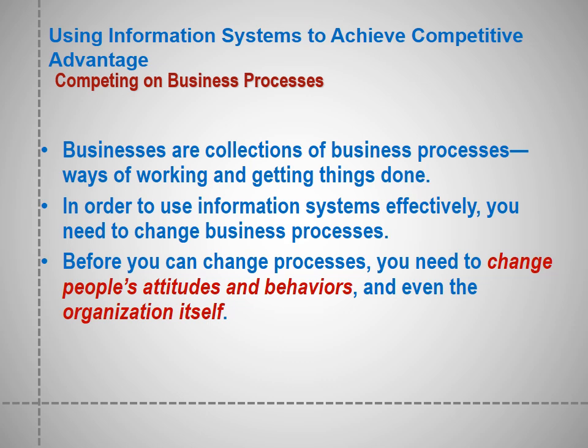Now we go to competing on business processes. Businesses are collections of business processes — ways of working and getting things done. Sometimes they are written in manuals, but in many cases they are informal. To use information systems effectively, you need to change business processes, and one way to do it is to change people's attitudes and behaviors. Traditional organizations are often resistant to change, and that's the problem. In order to improve business processes, the mentality of your people must change, their attitude must change, and so must the organization itself. If they embrace the change, it's good for the organization.